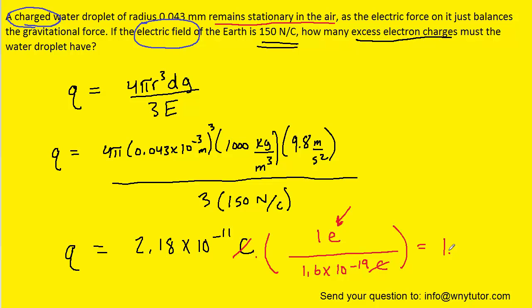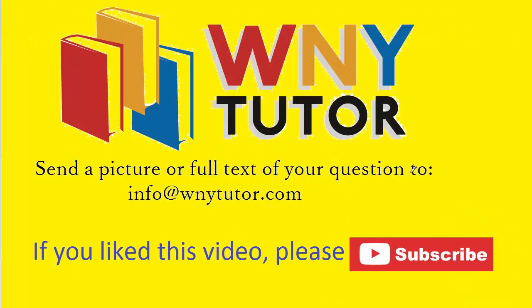And when we multiply, we get 1.36 times 10 to the positive 8 electrons. So that would be the number of excess electrons on that spherical water droplet.